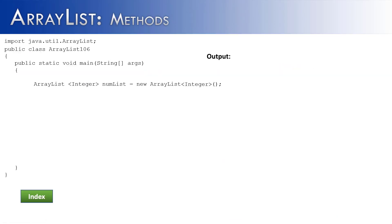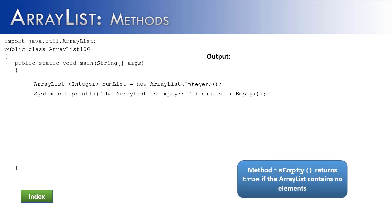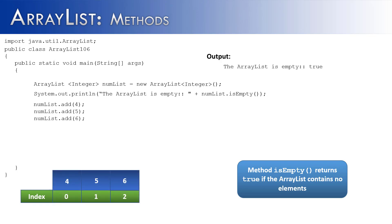In this example, we're starting with our ArrayList numList, but we're not going to add any values to it. We're going to call a method named isEmpty. What isEmpty does is return true if there's nothing in the ArrayList, or false if there is something inside. In this case, there's nothing inside the ArrayList, so it returns true. Then if we add some values and call isEmpty again, it would return false because there are elements inside the ArrayList.